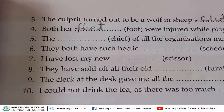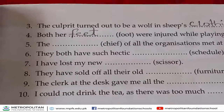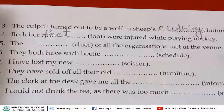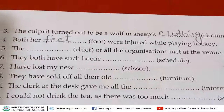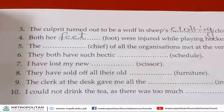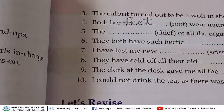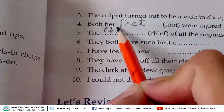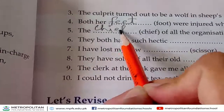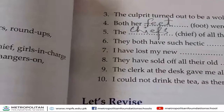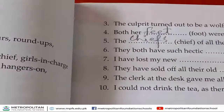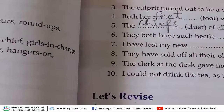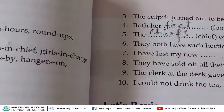Then number five: 'The ___ CEOs of all the organizations met at the venue.' So the answer is 'CEOs', and then we move to the next exercise.